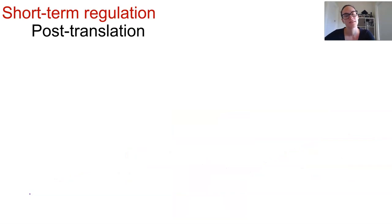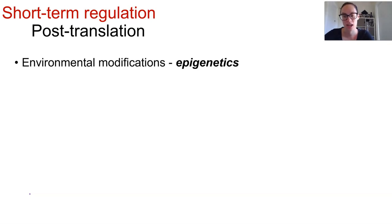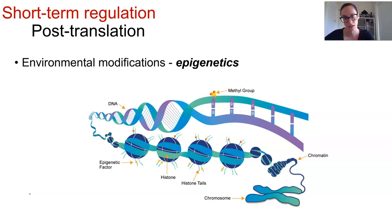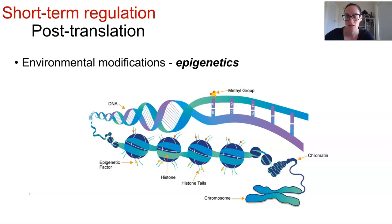Environmental changes can influence gene expression without changing the actual DNA sequence, and these are known as epigenetic changes. These types of changes can be chemical, like the methylation and the acetylation on histones or DNA. They can be due to non-coding RNA sequences or post-translational modification — so all those things we've already covered can be what is occurring in an epigenetic change.